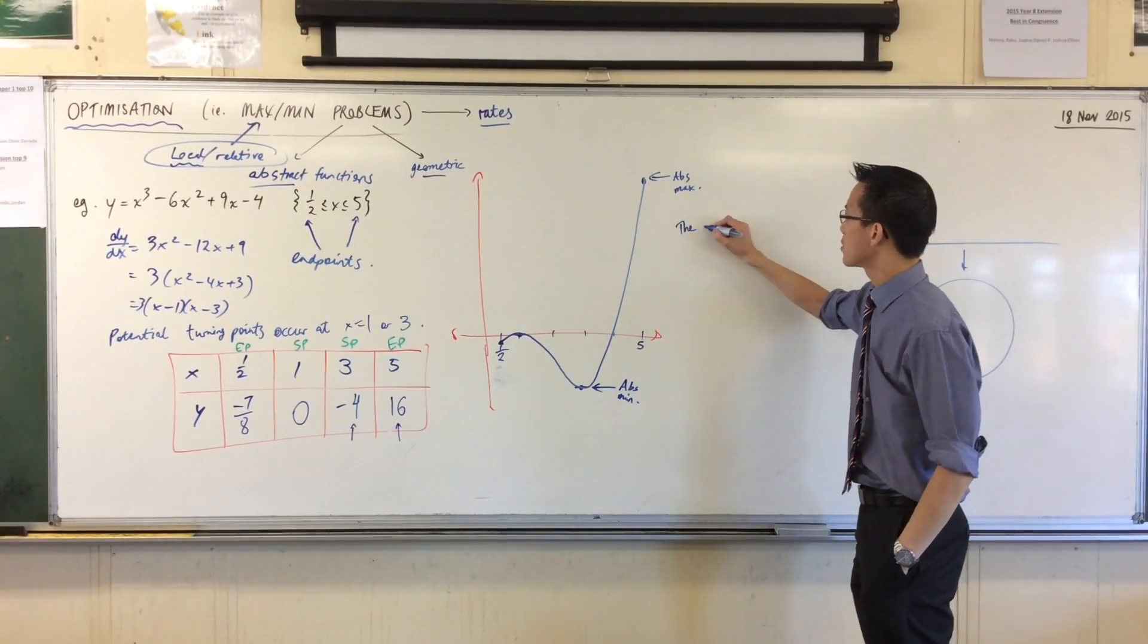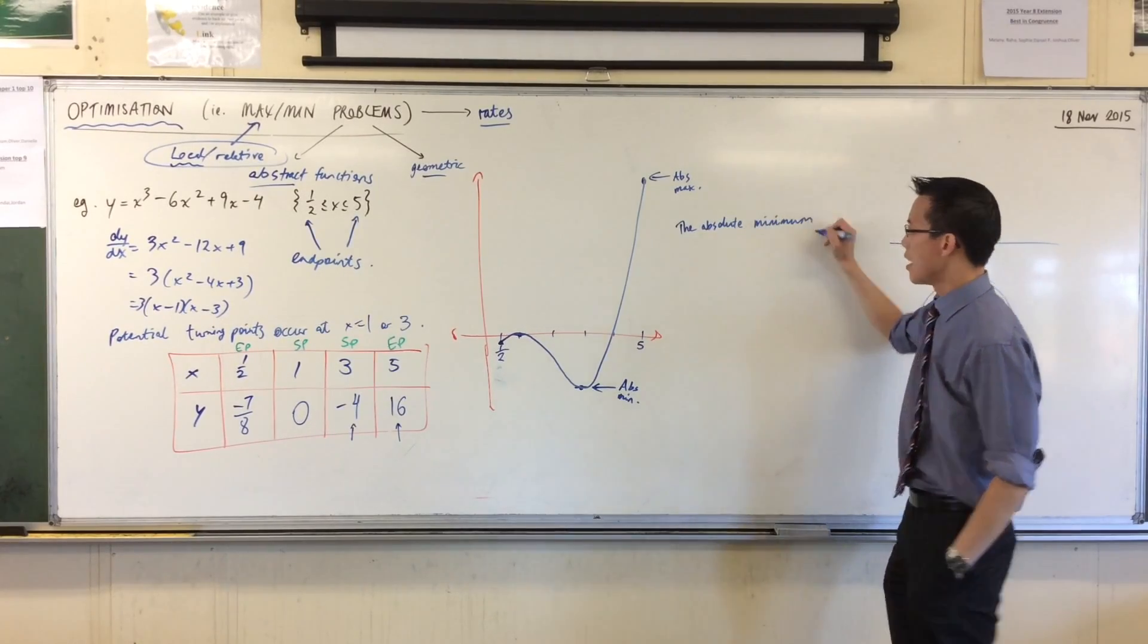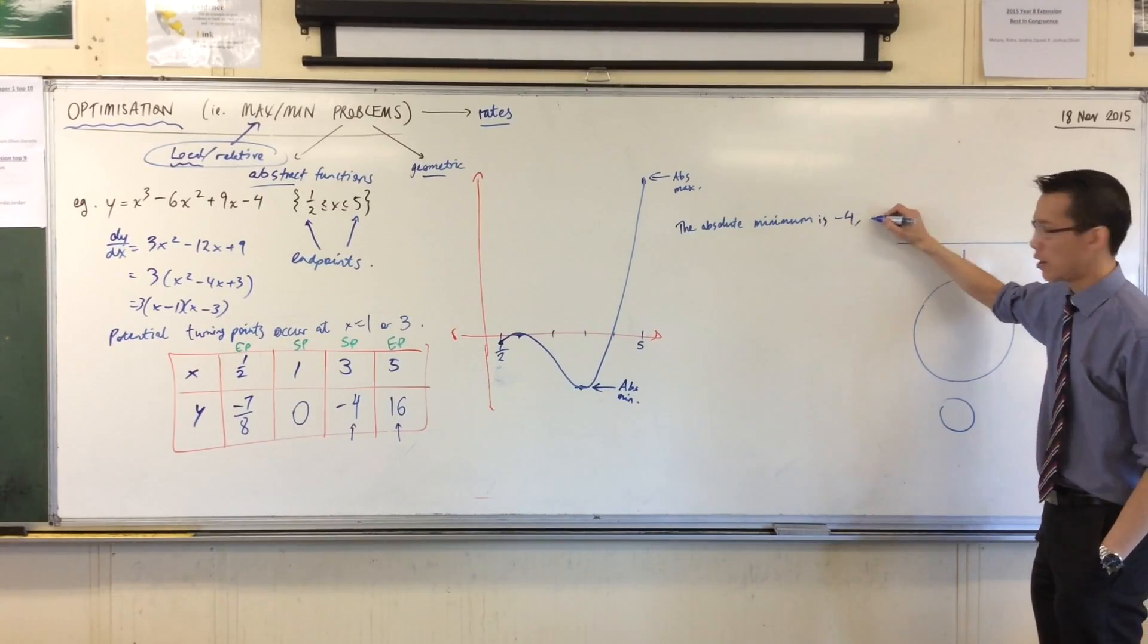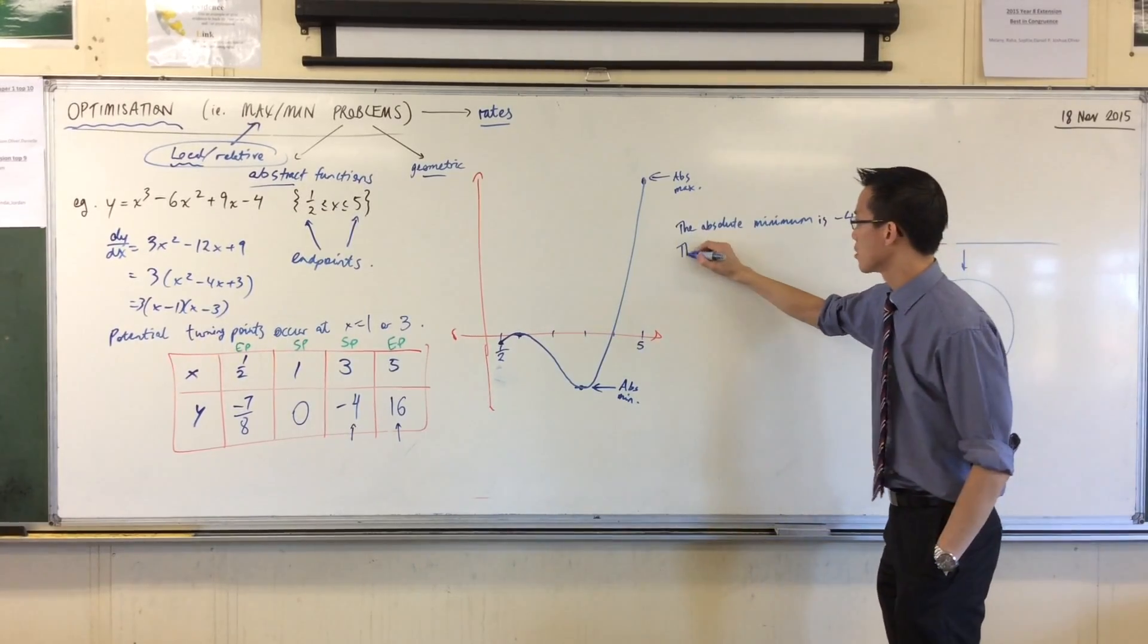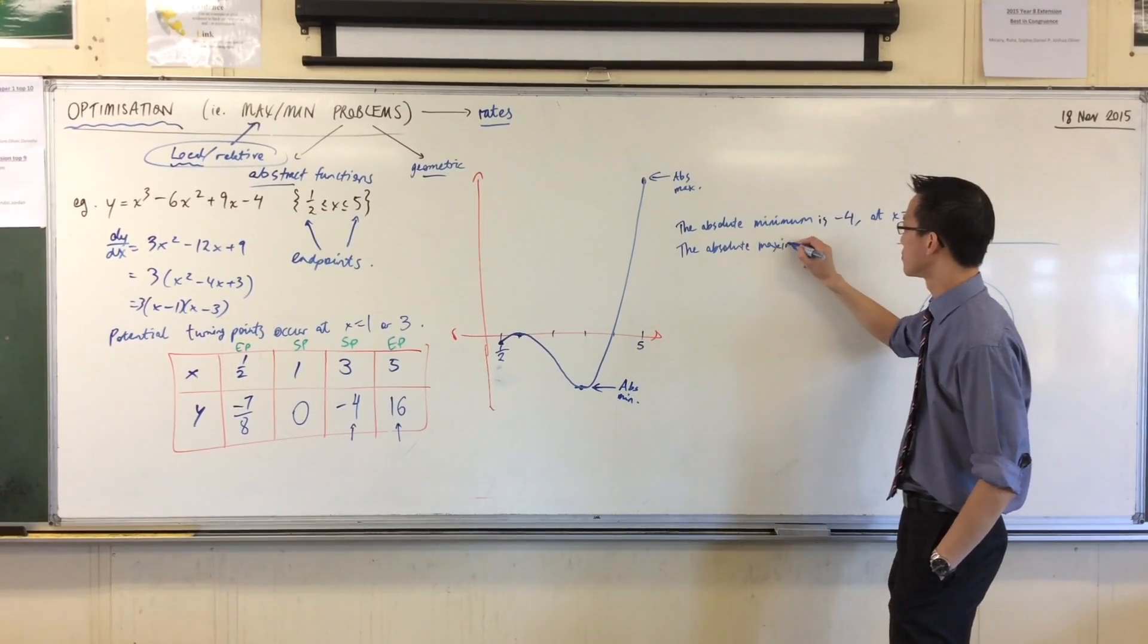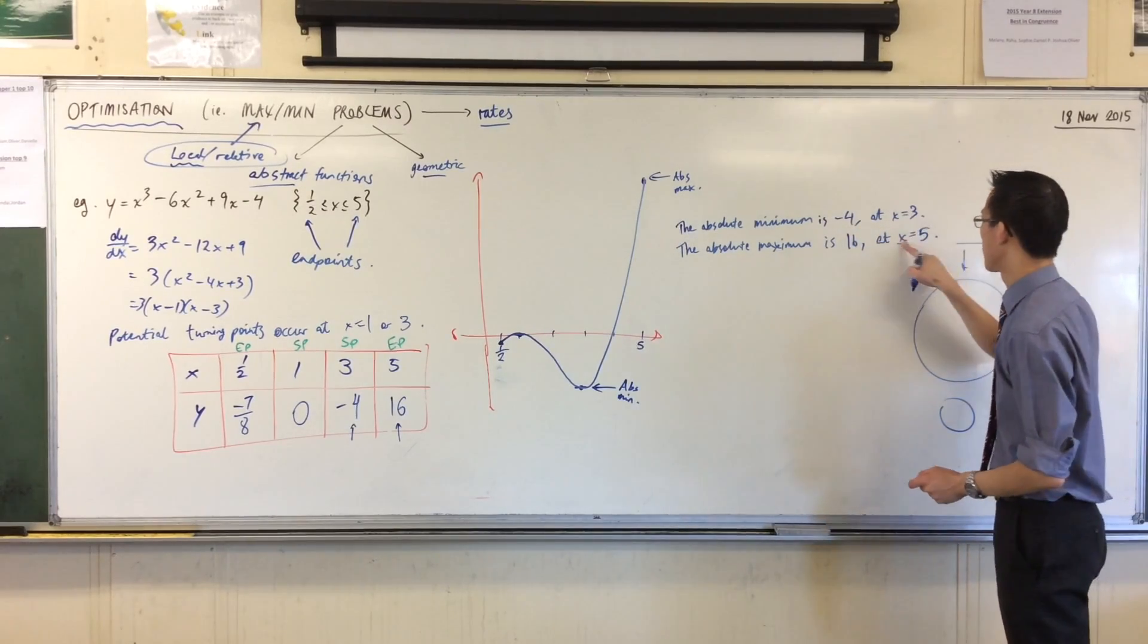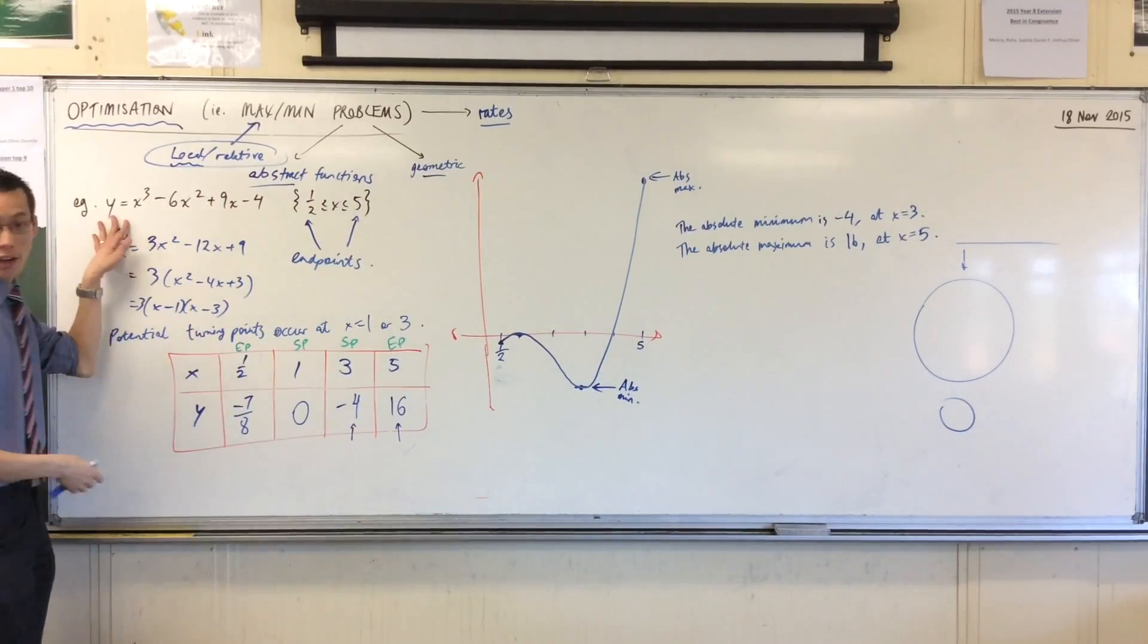So I did say this verbally before but I'll just write it as well. How am I going to conclude this? I would say the absolute minimum the minimum itself is this value minus four that's the lowest it can actually go the absolute minimum is minus four which happens at x equals three and likewise the absolute maximum is this actual value 16 which occurs at x equals five. Correct, that's right. I'm looking for the function itself.